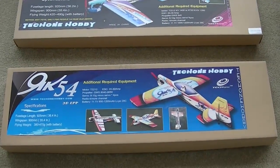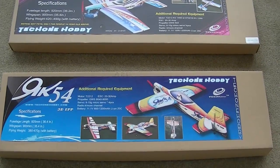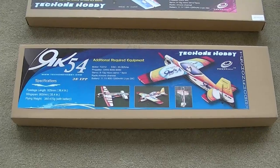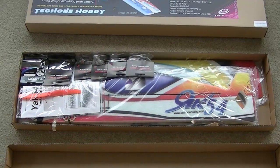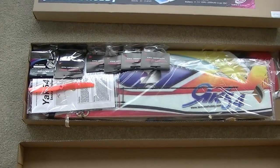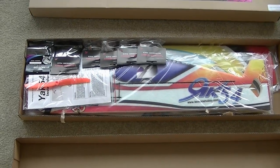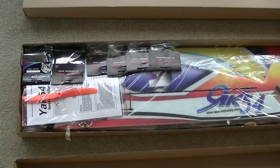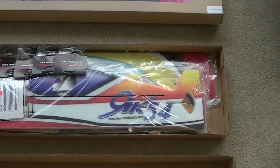Let's take a look inside the Yak 54 and see what it looks like. Looks like it's nicely packed, has all the electronics. This is an ARF, supposed to be almost ready to fly but looks like it's going to take a little bit of building.